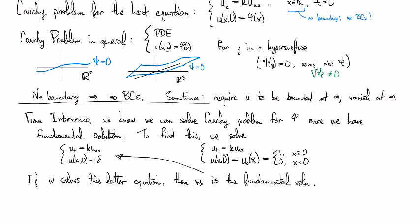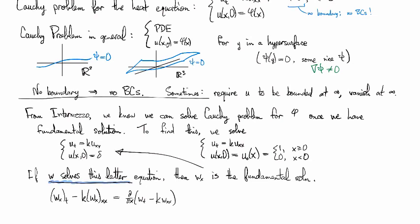notice that if we have, so if w is a solution for the one with the unit step function, then if we look at w_x and we plug it into the heat equation, so applying the heat equation to it, we differentiate it and then subtract k times its second space derivative, right? Well, since this is a linear equation, I can reorder the derivatives however I like. And so then this one looks like d/dx of w_t minus kw_xx. But since we chose w to solve that heat equation, this gives us d/dx of zero, which is zero.